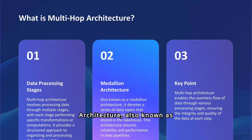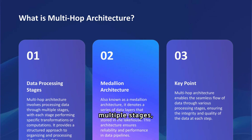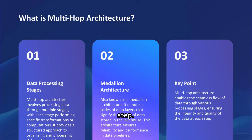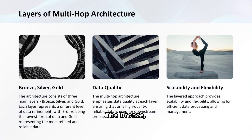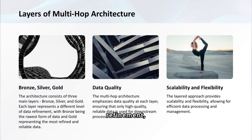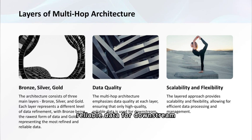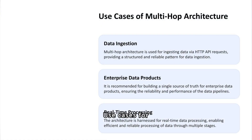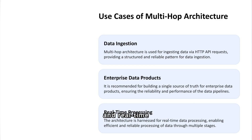MultiHop Architecture, also known as Medallion Architecture, processes data through multiple stages, enhancing data quality and integrity at each step. The Bronze, Silver and Gold layers represent increasing data refinement, ensuring high quality and reliable data for downstream processes. Use cases include data ingestion, enterprise data products and real-time processing, offering structured and reliable data pipelines.